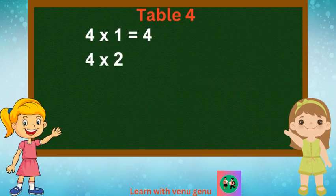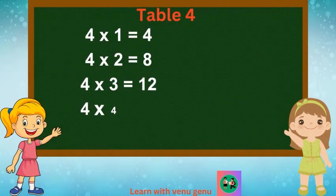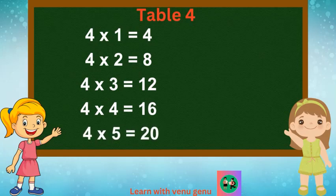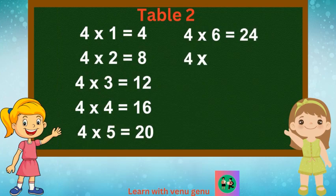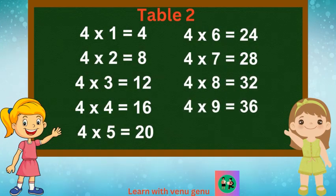Once again: 4 1s are 4, 4 2s are 8, 4 3s are 12, 4 4s are 16, 4 5s are 20. 4 6s are 24, 4 7s are 28, 4 8s are 32, 4 9s are 36, 4 10s are 40.